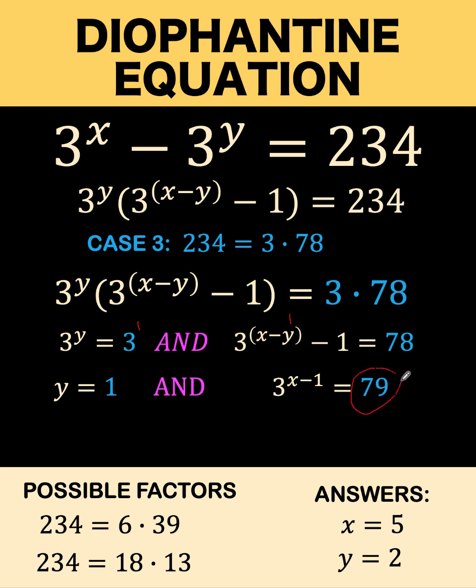Now 79 cannot be expressed as powers of 3. That means we'll not be able to get an integer value for x here. And again, this is not an acceptable solution because we want both the x and the y values to be integers. So let's proceed to the remaining two possible cases.